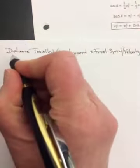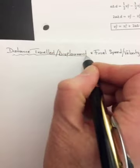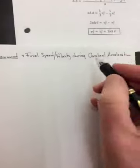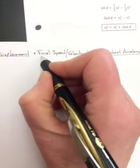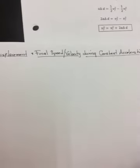What they are: the first one is to find distance traveled or displacement during a constant velocity. And the second one will be to find the final speed or the final velocity during constant acceleration.